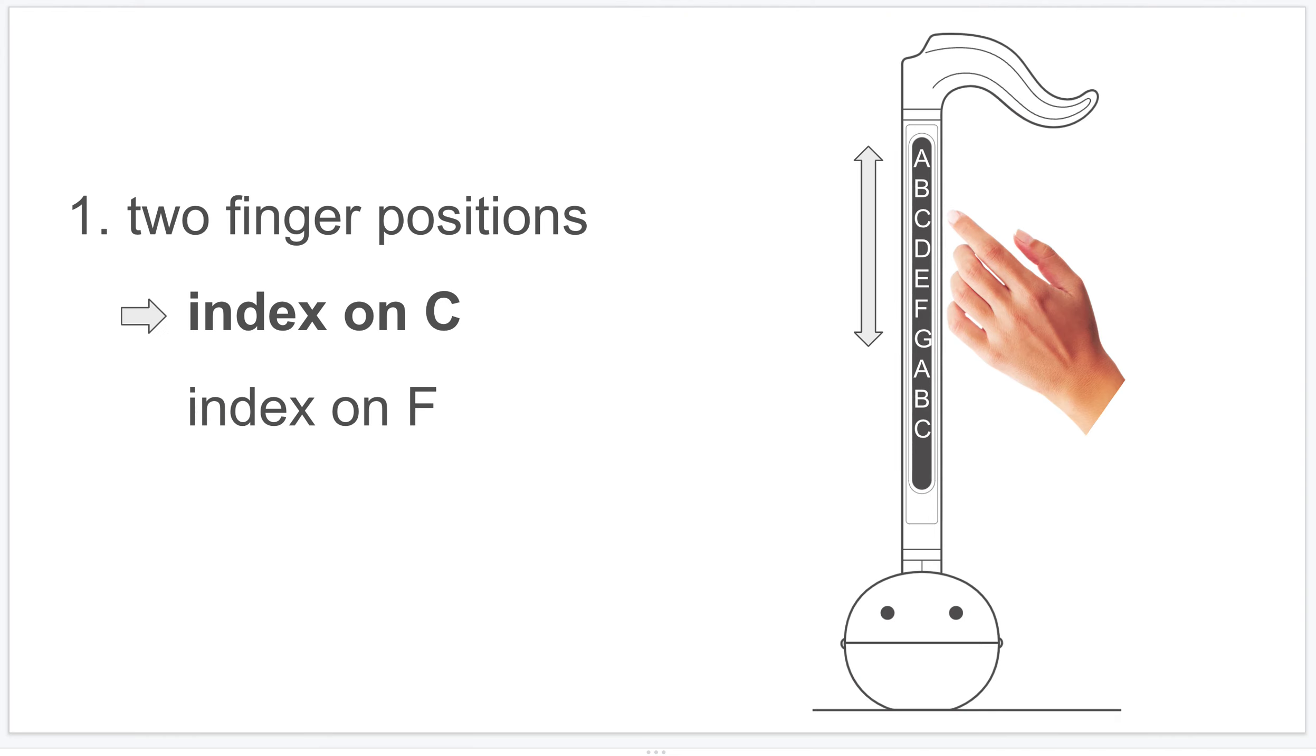So the first tip is to define two finger positions. This is like using your computer keyboard. When in resting position, your index finger will be on a key with a little bump. Here, my first finger position, or you can say hand position, is to have the index finger on the C note. Naturally, the four fingers cover C to F.